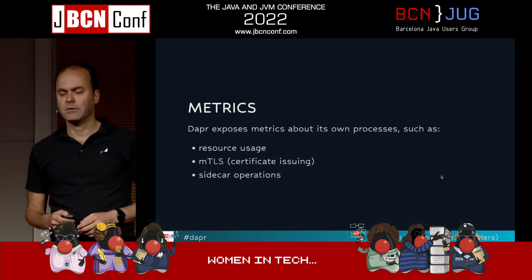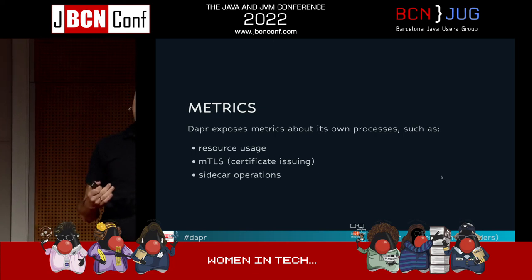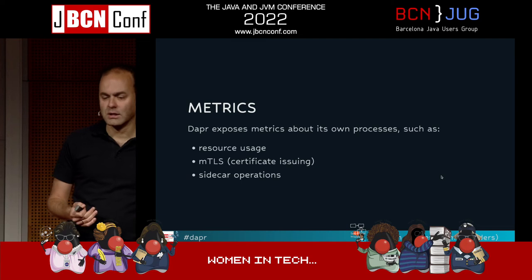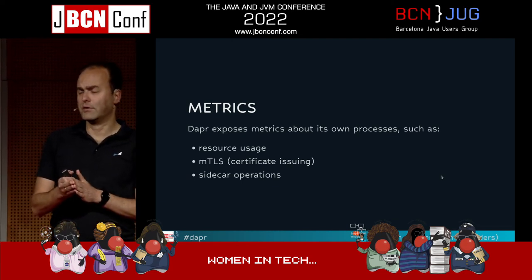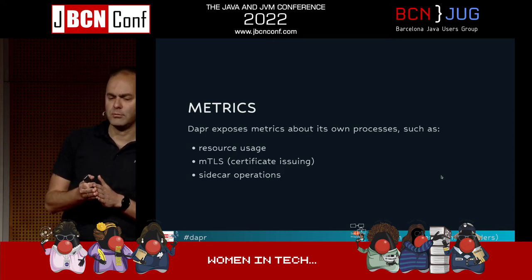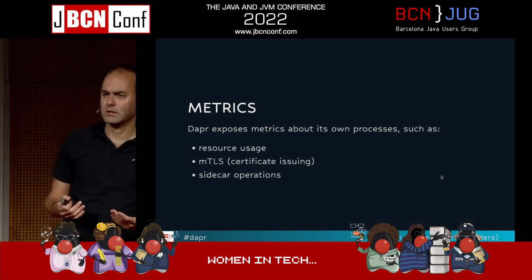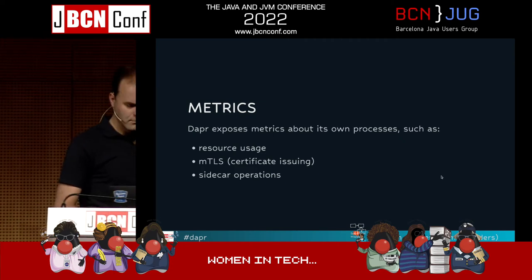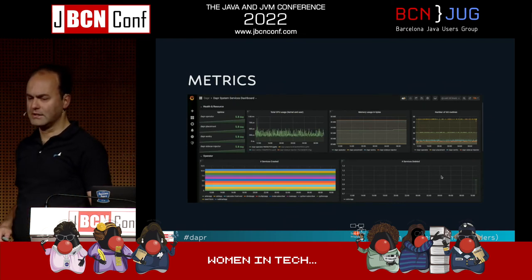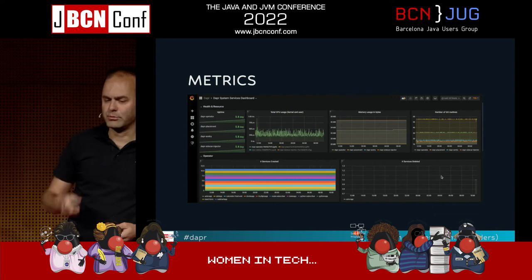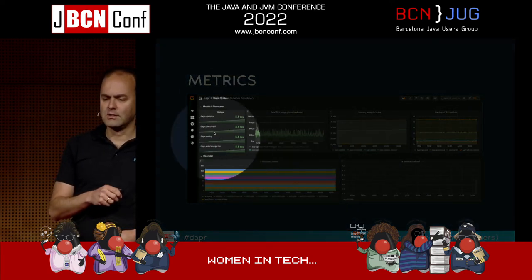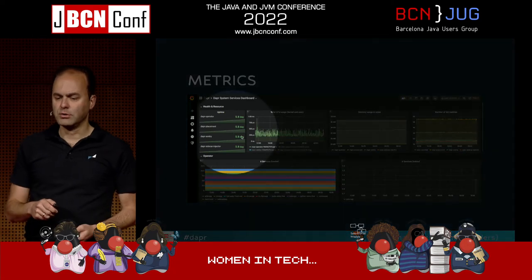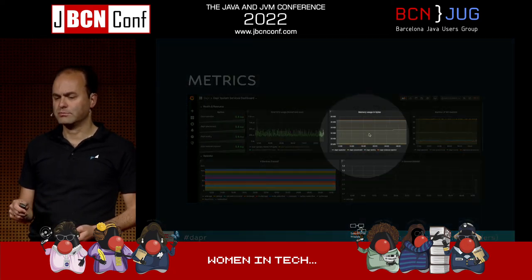DAPR itself exposes a few extra metrics about itself — meta information. It emits metrics about how much CPU my sidecar is using, how certificate issuing goes if you have mutual TLS enabled, whether certificate requests are fulfilled. The metrics dashboard from the DAPR documentation shows uptime steadily increasing — meaning the system is running well with no reboots — CPU usage pretty stable, memory usage pretty stable.